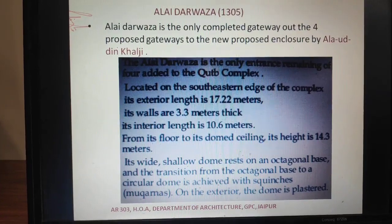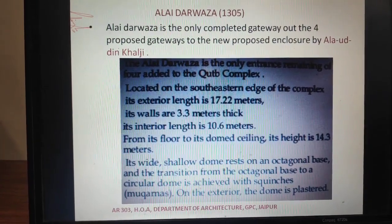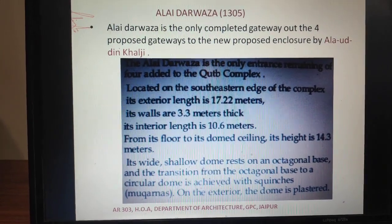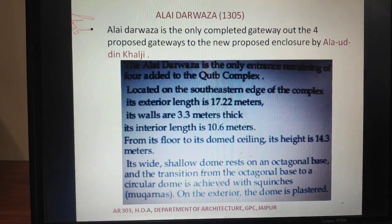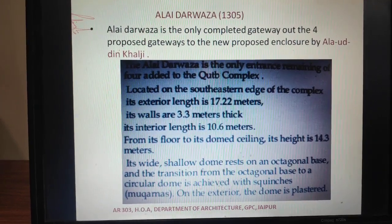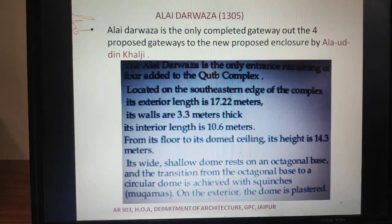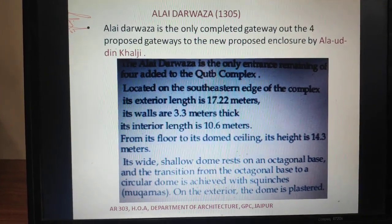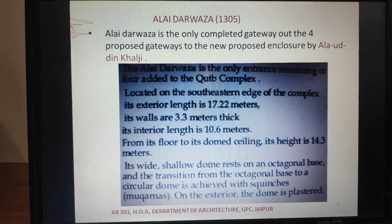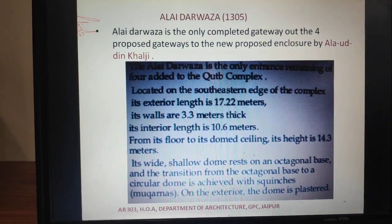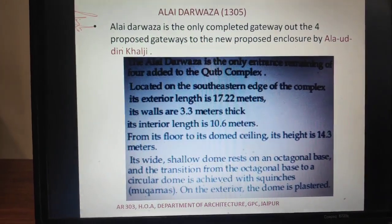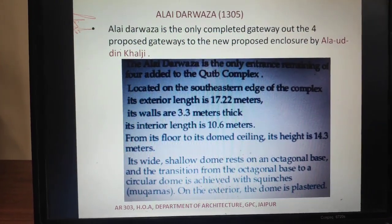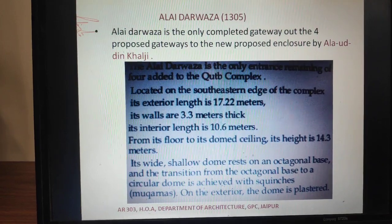Now we will talk about Alai Darwaza. The Alai Darwaza is the complete enclosure of the cloister. The mosque was completed on the north and eastern sides. They also created the southern side of the mosque. This is the only completed structure by Alauddin Khalji in the Kutub complex.